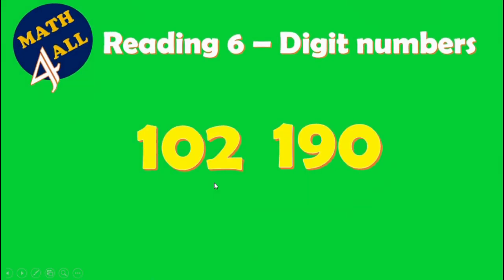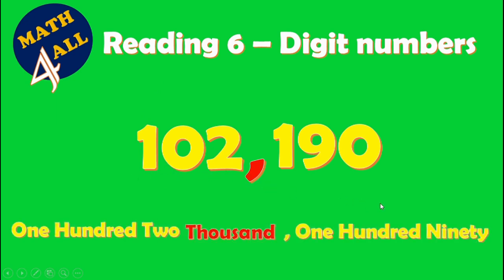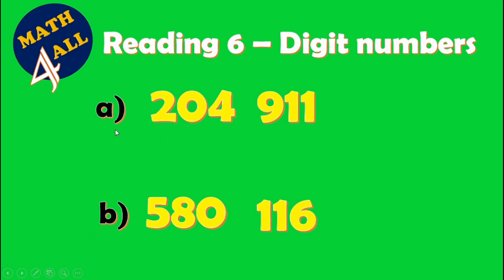Now let's start reading six-digit numbers. We go again with the same steps: count from the right side three digits — one, two, three — and put a comma. This comma is called 'thousand.' Read from the left side: two hundred four thousand nine hundred...